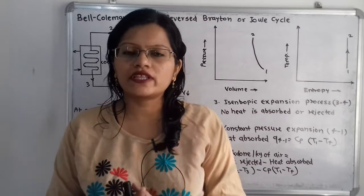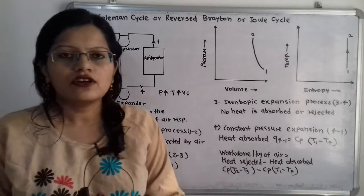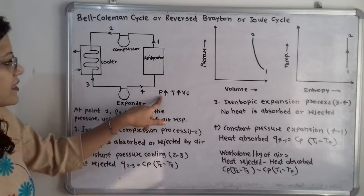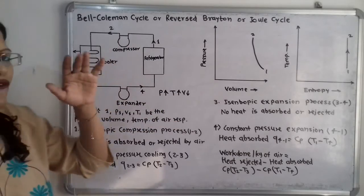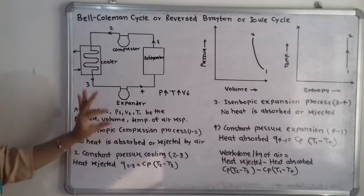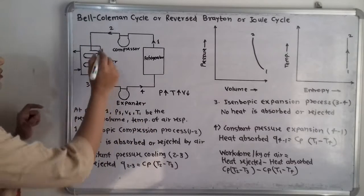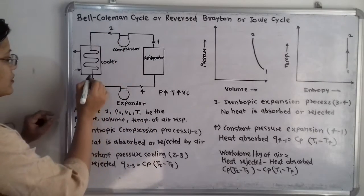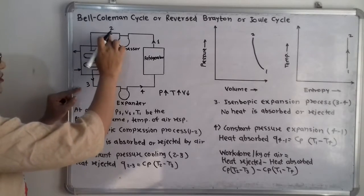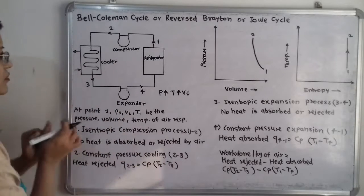The next process is constant pressure cooling. At the increased pressure and temperature, warm air enters the cooler and the constant pressure cooling process takes place. After point 2 there is the cooling process, and after the cooler we have point 3. This is process 2 to 3.